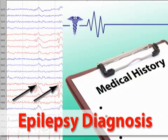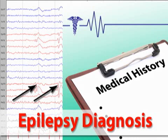The presence of spikes helps to confirm a diagnosis of epilepsy, provided the history is also convincing. Some people have EEG spikes without seizures, so a history of seizures is needed to make a diagnosis.